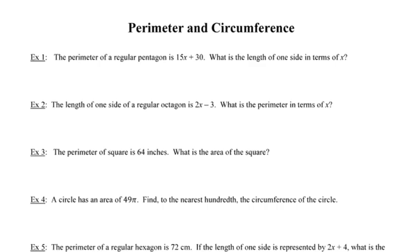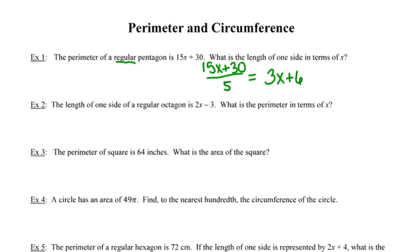In example 1, the perimeter of a regular pentagon is 15x plus 30, and we want to know the length of one side in terms of x. We know the perimeter was found by adding all five equal sides together. So working backwards, we divide the perimeter evenly among all five sides, giving us a side length of 3x plus 6.